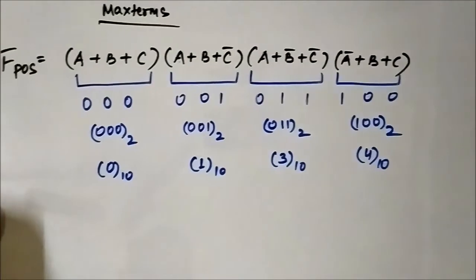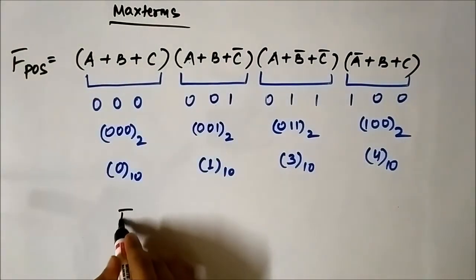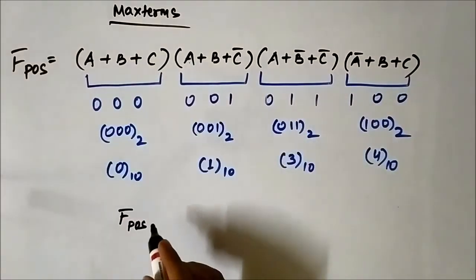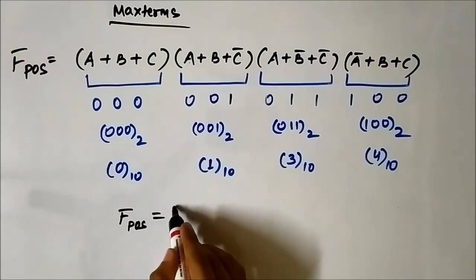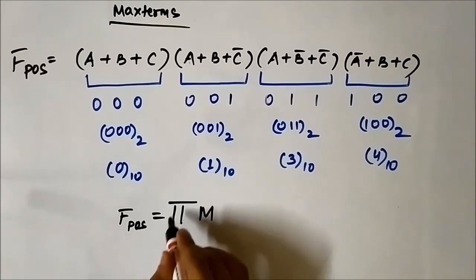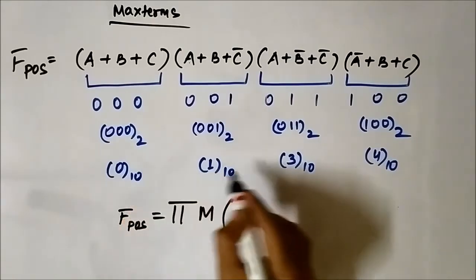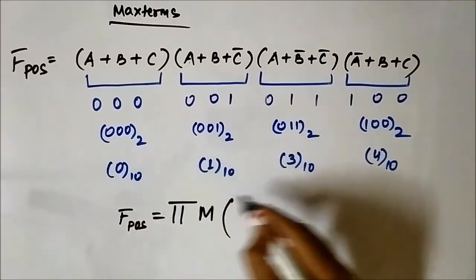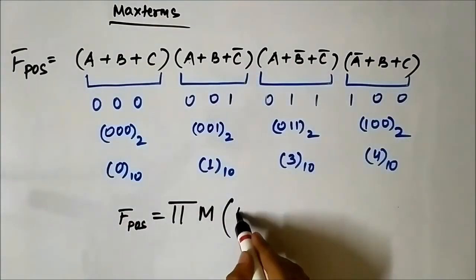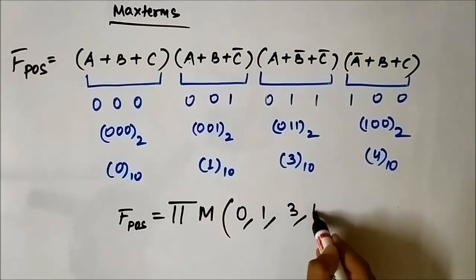We can write this POS expression in an equivalent way using the pi symbol, then capital M, followed by the decimal representations of each of the max terms — that is 0, 1, 3, and 4.